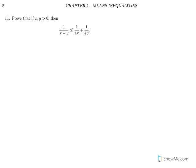Exercise 11. Prove that if x, y are positive, then 1 over x plus y is less than or equal to 1 over 4x plus 1 over 4y.